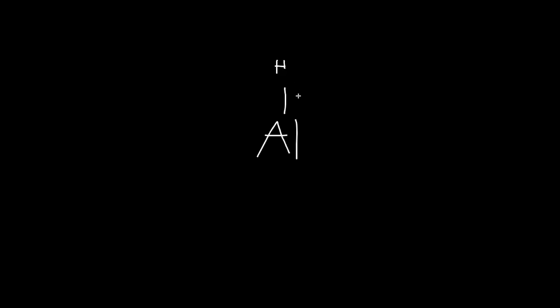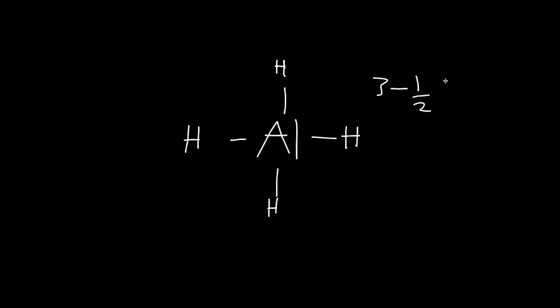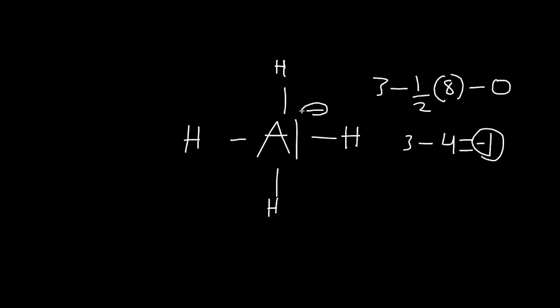Let's try aluminum with four hydrogens. To calculate the formal charge, aluminum has a valence electron of three, minus how many bonds it has: one, two, three, four — four bonds is eight electrons — so one-half of eight, minus how many lone pairs, zero. Half of eight is four, so three minus four equals negative one. So aluminum has a negative charge here.